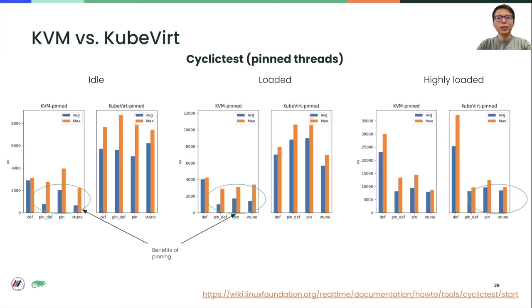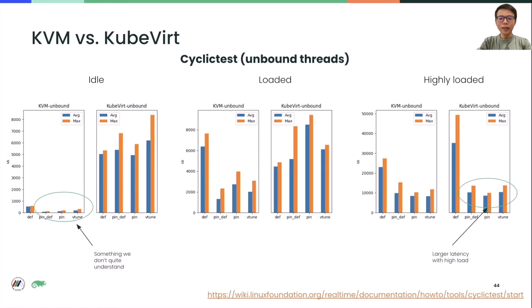There is a similar trend in cyclic test, but we can clearly see the benefits of pinning. The topology is probably not as important here because cyclic test is just waking threads up, doing some computations, and going to sleep. For the unpinned case, latency is larger compared to pinned cases. One thing we still don't fully understand is that in KVM, the latency for the idle case is smaller than the pinned case — we are still investigating the reasons.